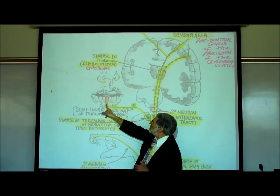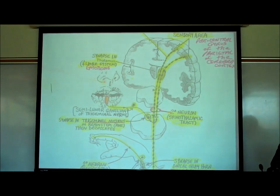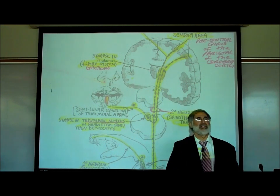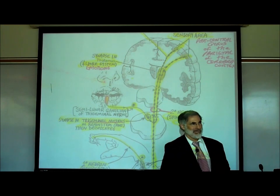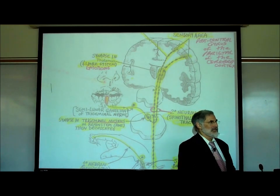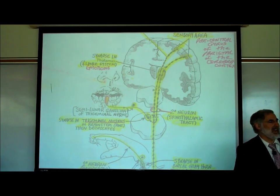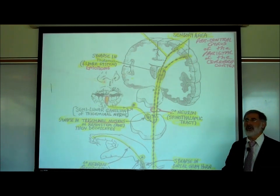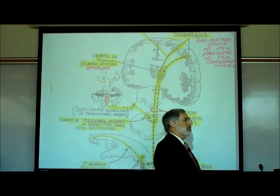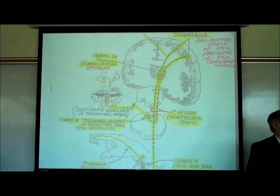Let's imagine somebody's pulp cavity is infected — they need a root canal. Cells are being injured, releasing kinins and prostaglandins that activate pain sensory neurons in the trigeminal nerve. The cell body of these sensory neurons is in the semilunar ganglion. These sensory neurons synapse in the trigeminal nucleus in the brain stem. If you had a root canal, you had so much pain you begged to see the dentist.